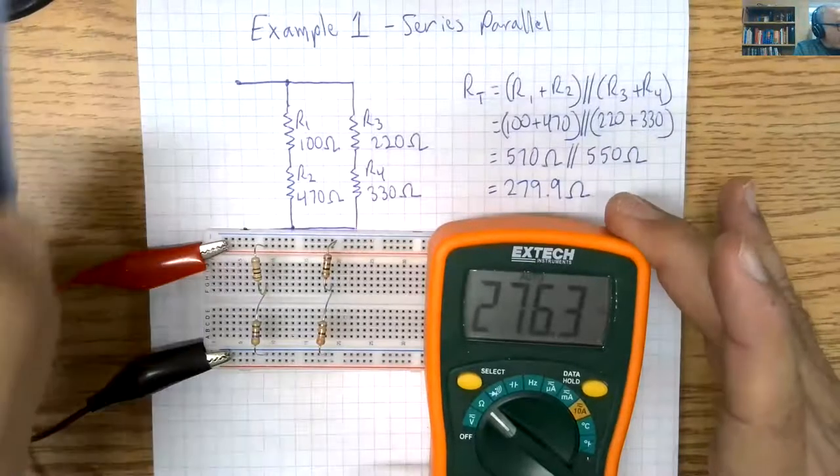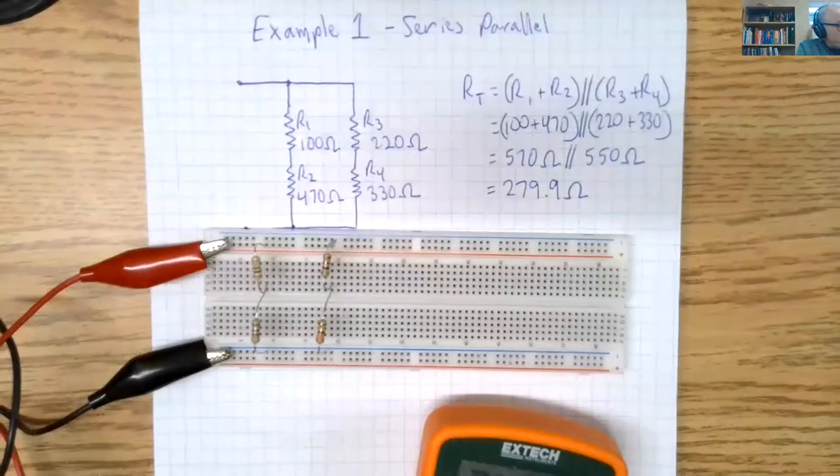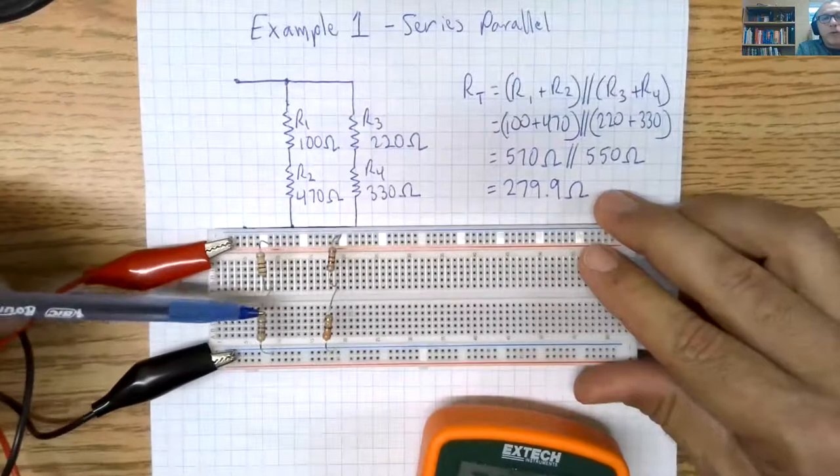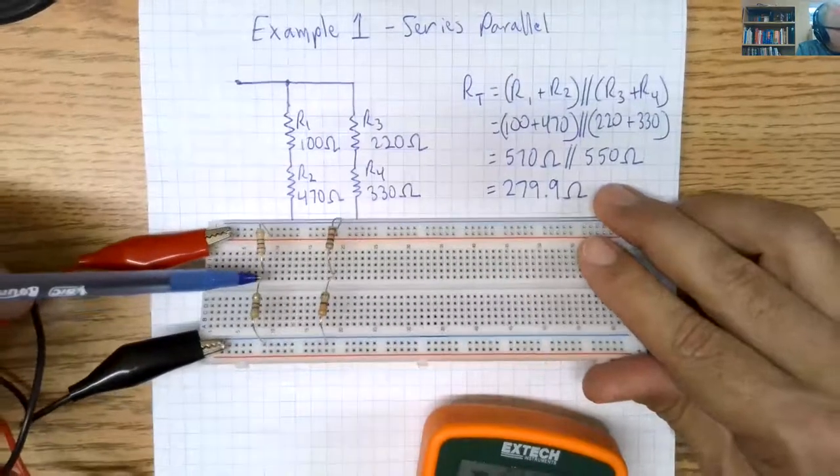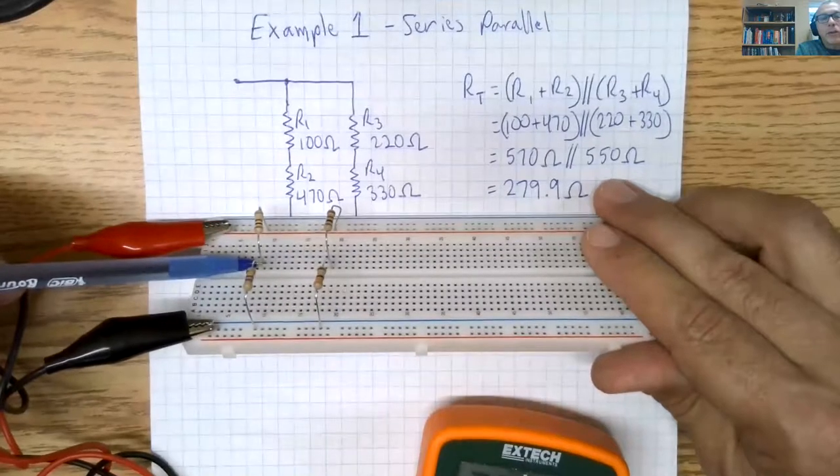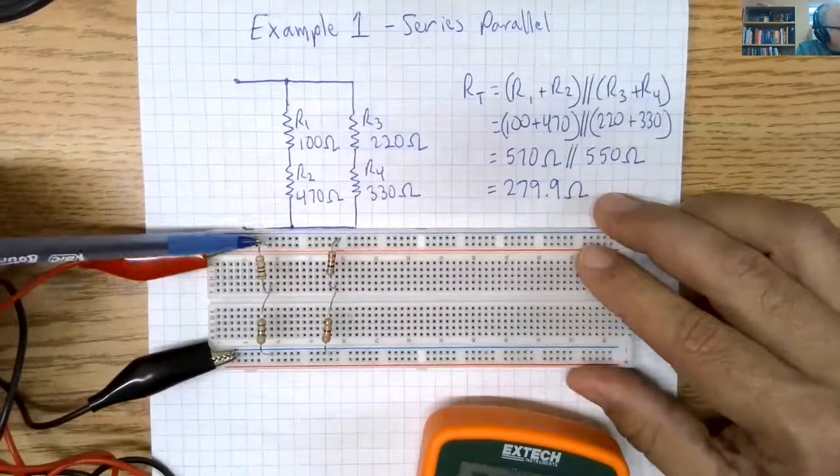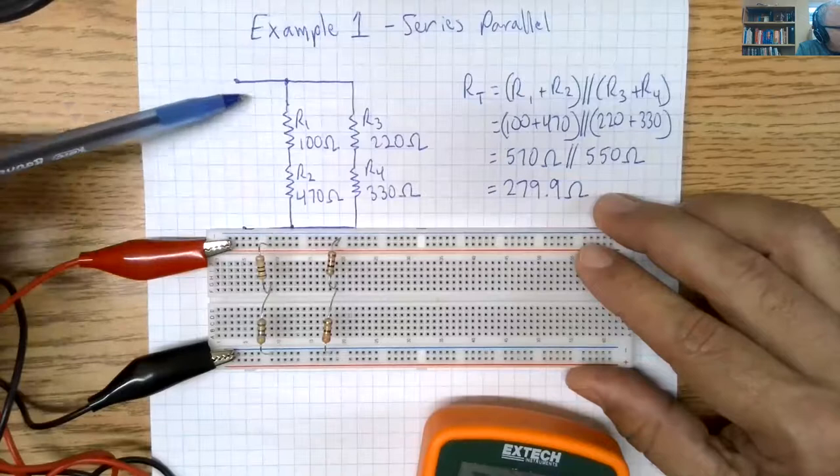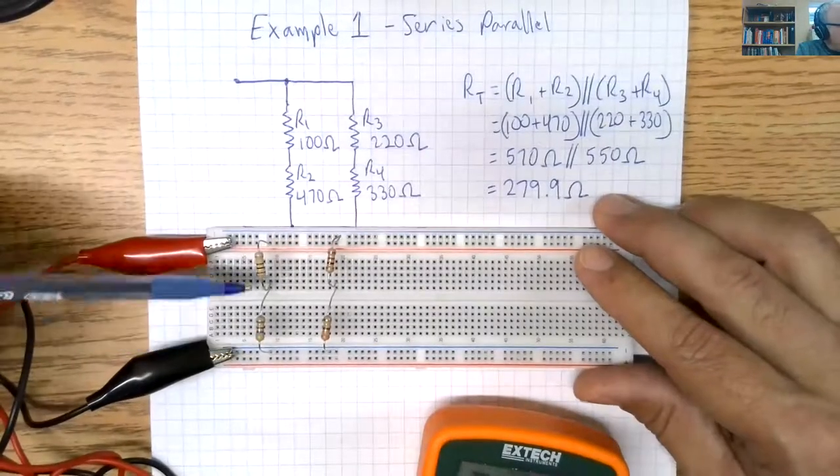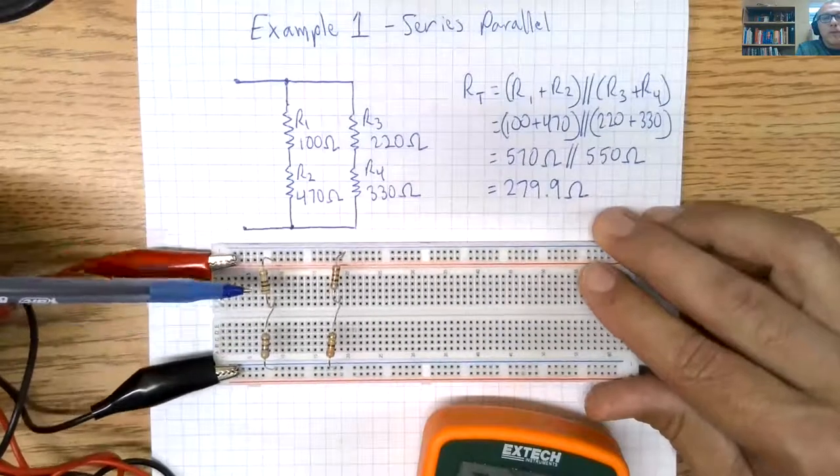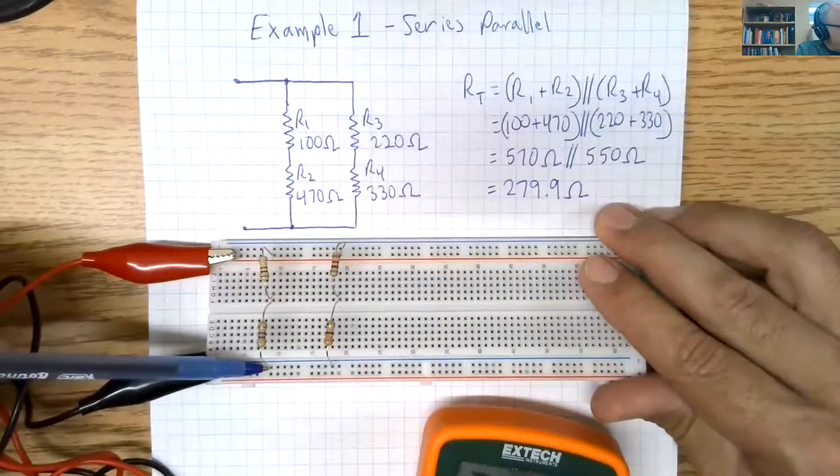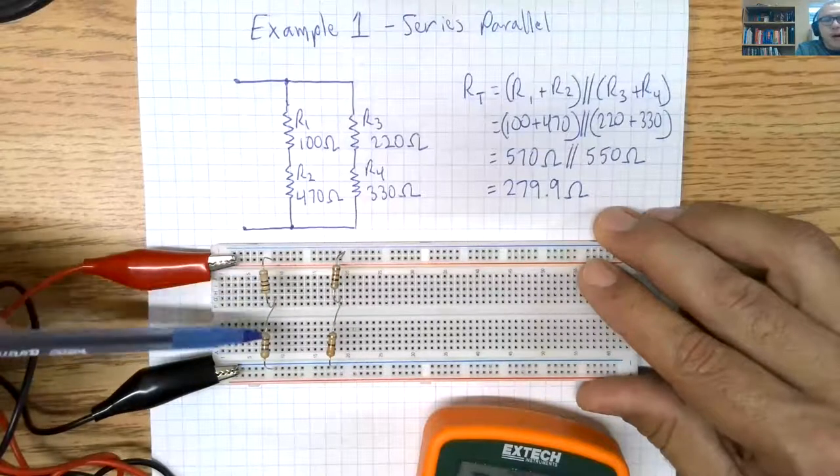The way they are connected is I have R1 in series with R2. So the one lead of R1 and R2 are in the same column, so they're connected to each other. And then the other end of R1 is connected to my common bar with R3, and the other end of R2 is connected to the other bar. So R1 and R2 are in series.